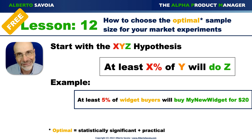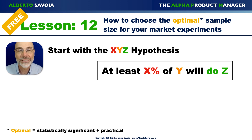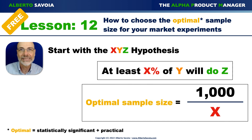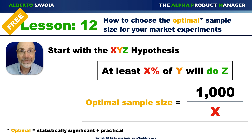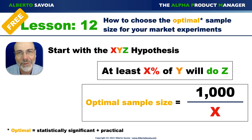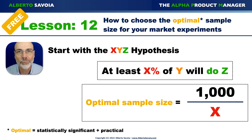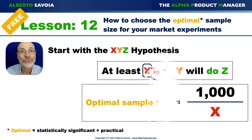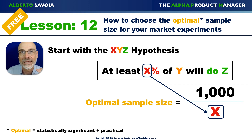If only one person in a million buys it, it's not worth pursuing. So starting with the XYZ hypothesis shows yet another example of its power, because the X from the XYZ hypothesis becomes the number you use to calculate your optimal sample size. The way you calculate your optimal sample size involves no complicated formulas with sigma and square roots that scare most people. What you do is take the number 1,000 — that doesn't change, it doesn't matter what your product is — and then divide it by X, where X comes from your XYZ hypothesis.